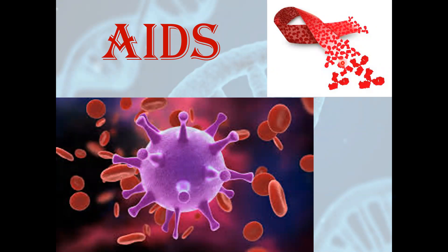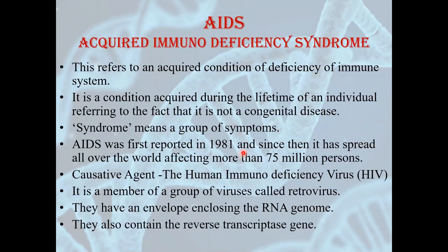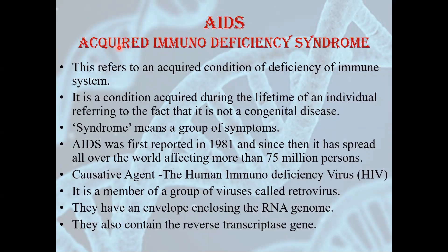You can see this is the symbol of AIDS given by NACO, National AIDS Control Organization. This is the virus that causes AIDS, that is HIV. The full form of AIDS is Acquired Immunodeficiency Syndrome. It is an acquired disease — acquired means the disease that we get after birth. This is not a congenital disease; it is not present in our DNA and we do not get it from our ancestors. The immune system of a person is deficient, hence immunodeficiency. And it is a syndrome, meaning a group of symptoms.